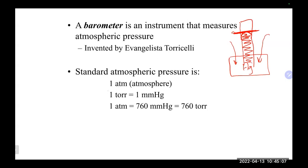An ATM — atmosphere — is probably the most common unit of pressure we deal with. A torr, named after the inventor of the barometer, is equal to one millimeter of mercury. It is a one-to-one relationship between a torr and a millimeter of mercury — if you need to convert, you simply change the units and the number stays the same.